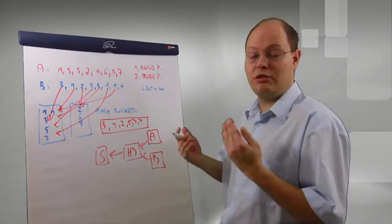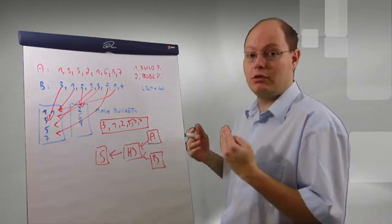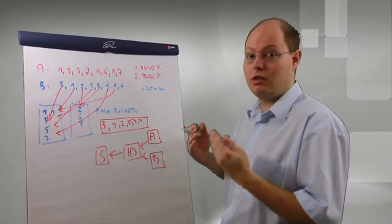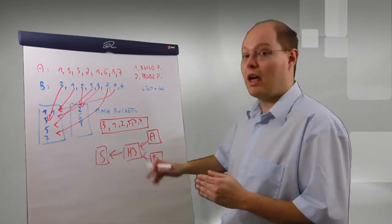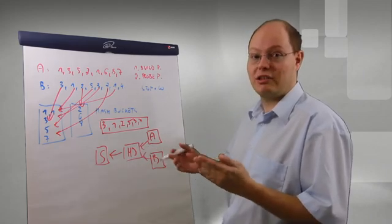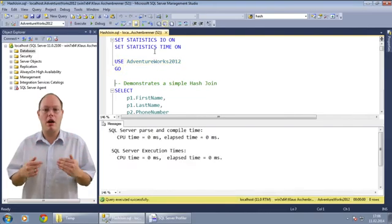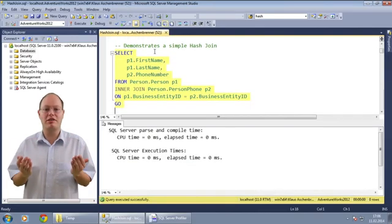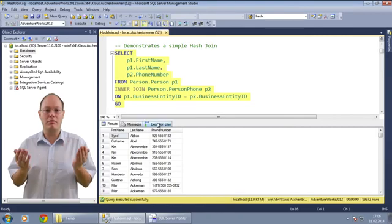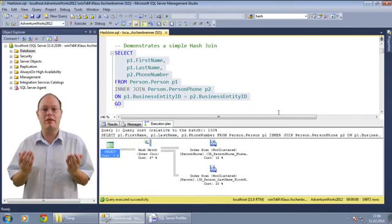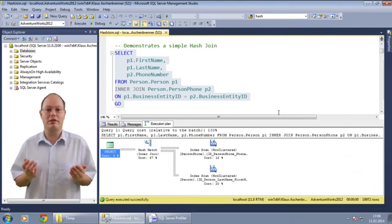Let's switch now over to SQL Server Management Studio, where we will look in more details on the hash join and some side effects like a hash spill. In the first step of this demo, I want to show you with a simple example how a hash join works in SQL Server. I am running here a join between the table person and person phone of the AdventureWorks 2012 database.